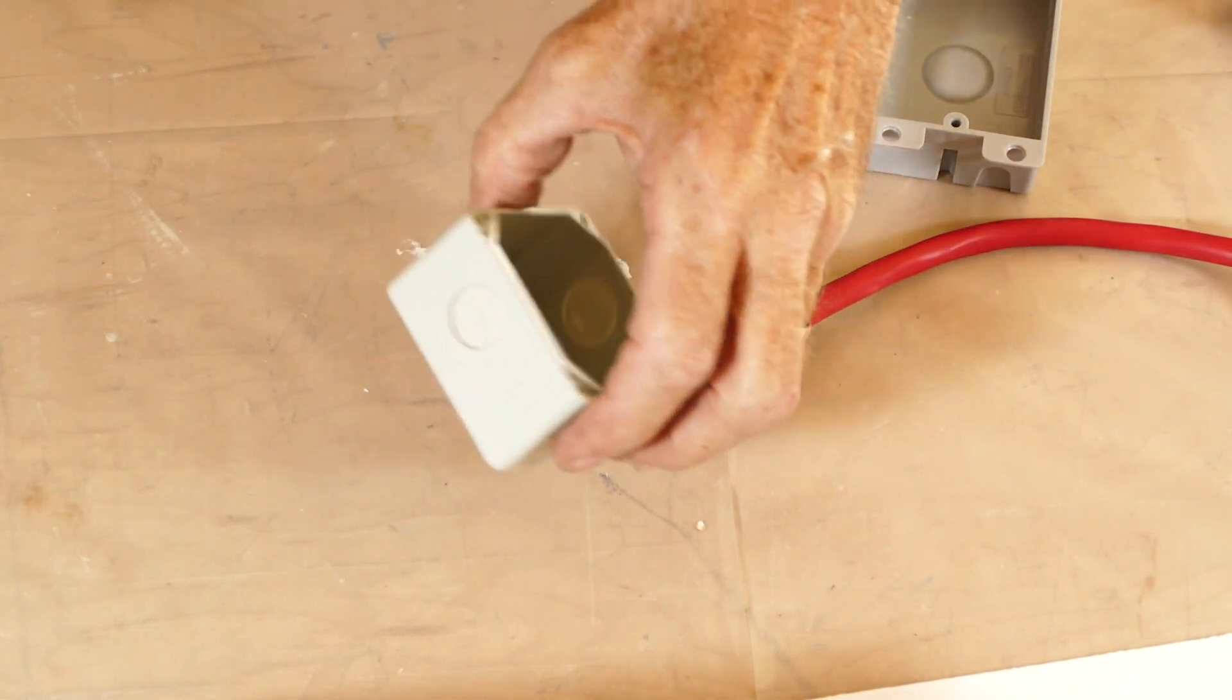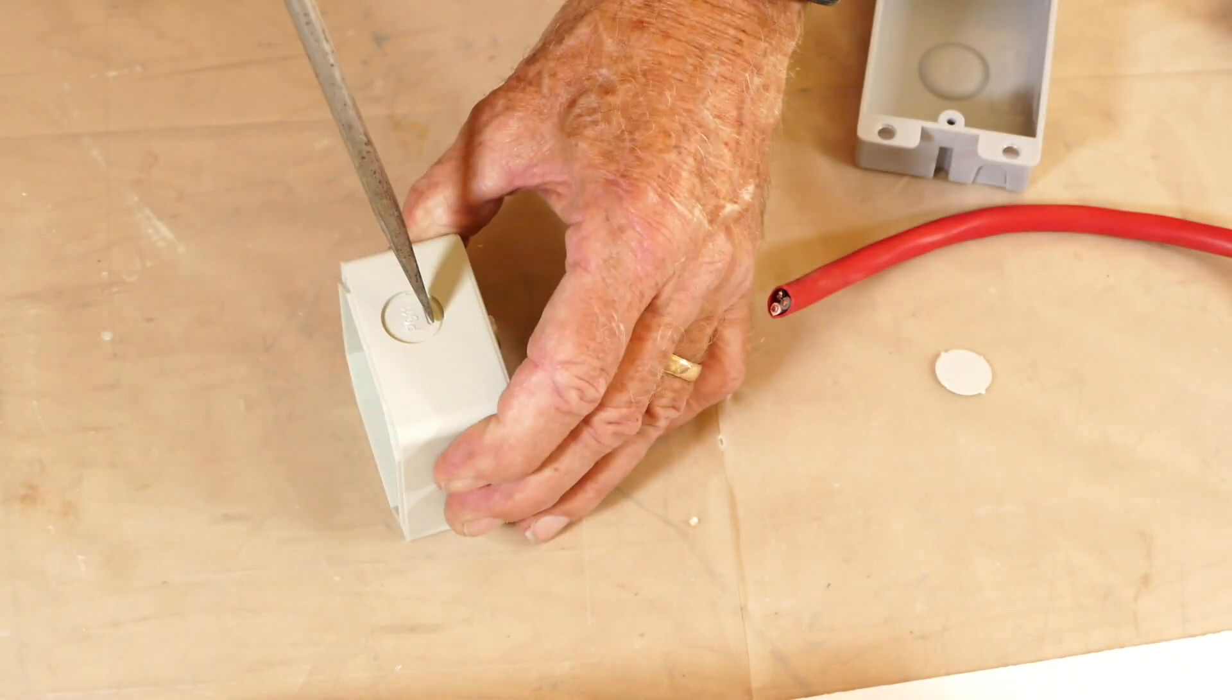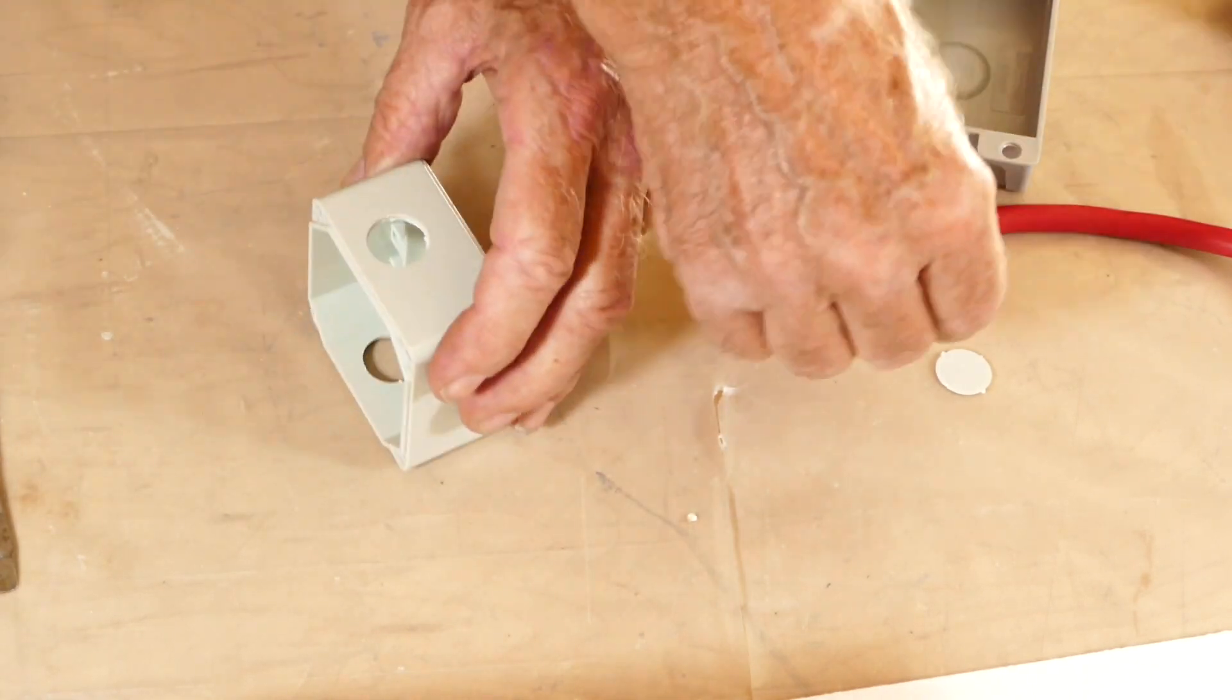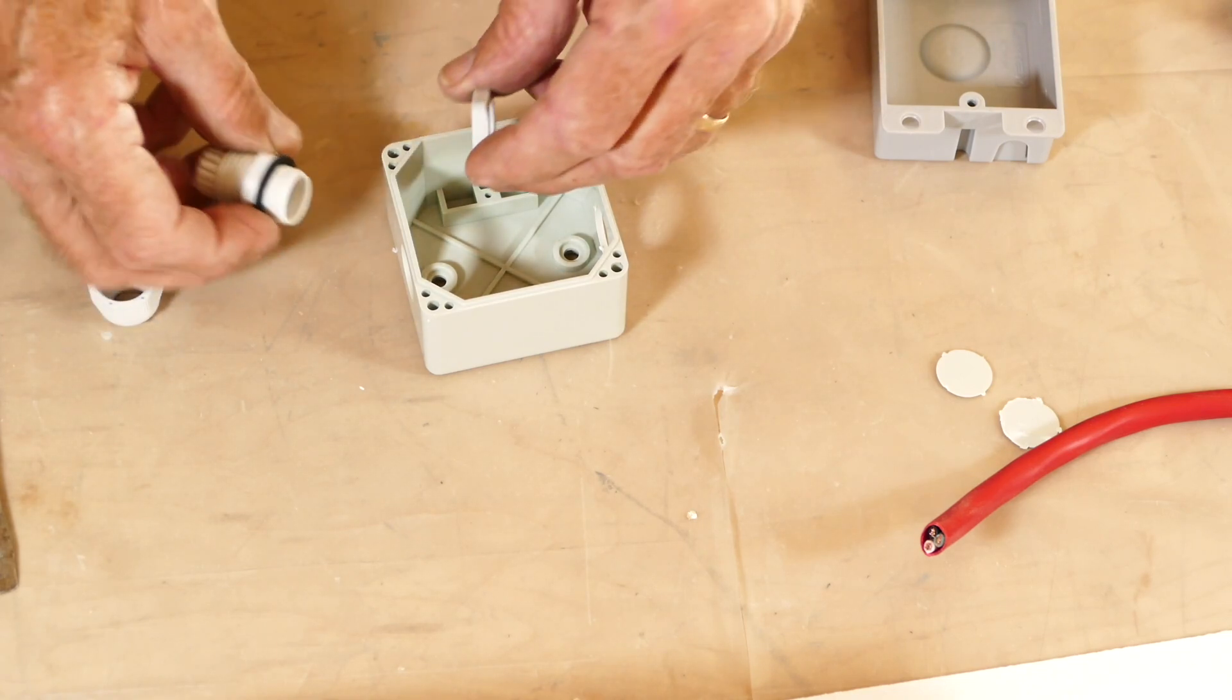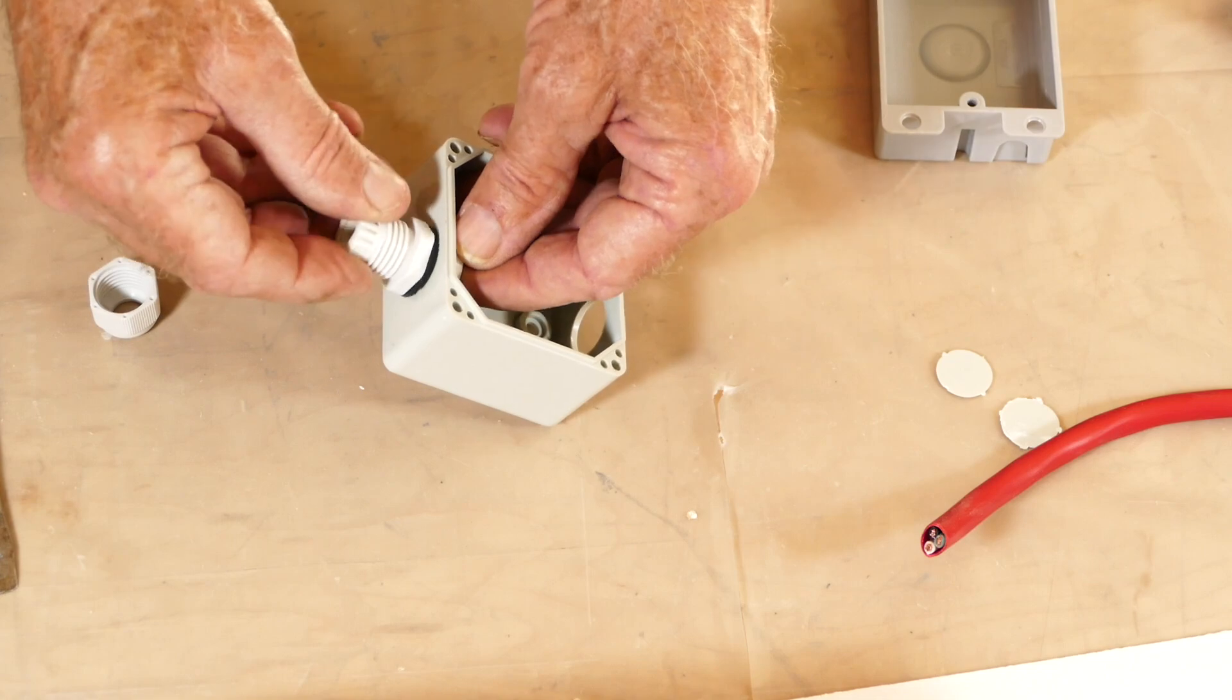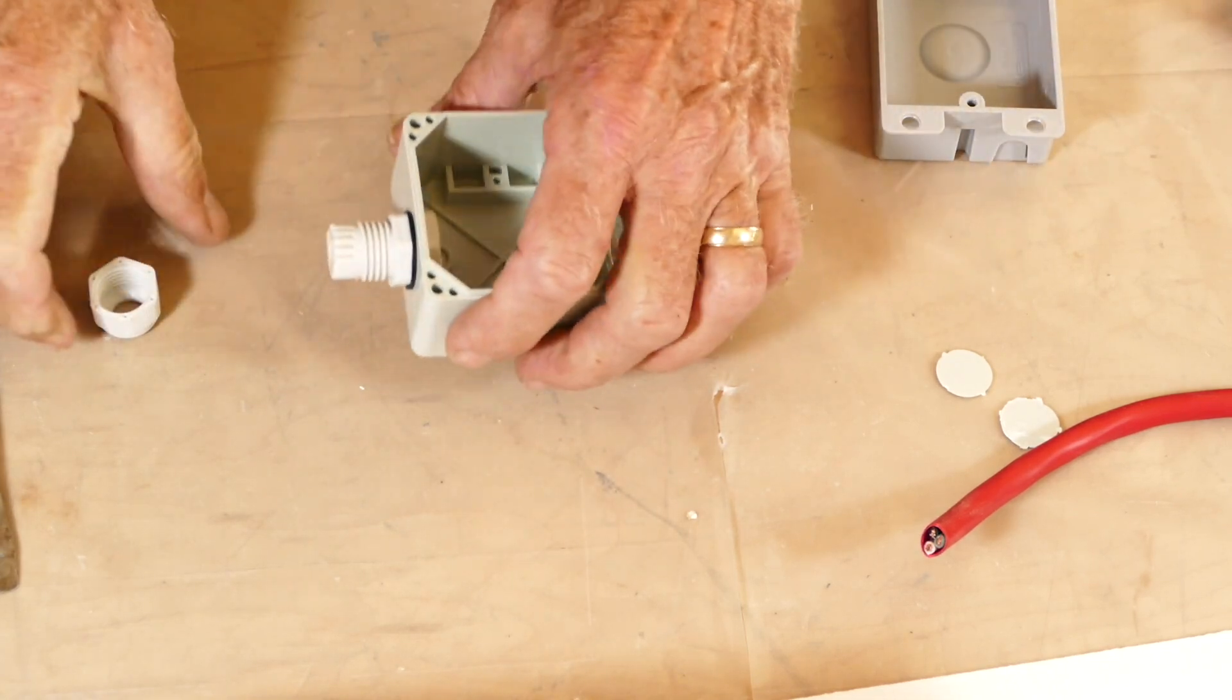The switch enclosure has two punch outs or knock outs that are used for routing the three cables. Use a screwdriver to remove them. The switch comes with two cable glands that hold the cables in place and seal the box from moisture and bugs. Remove the nut, slide the gland into place, and screw the nut back on to secure the gland.